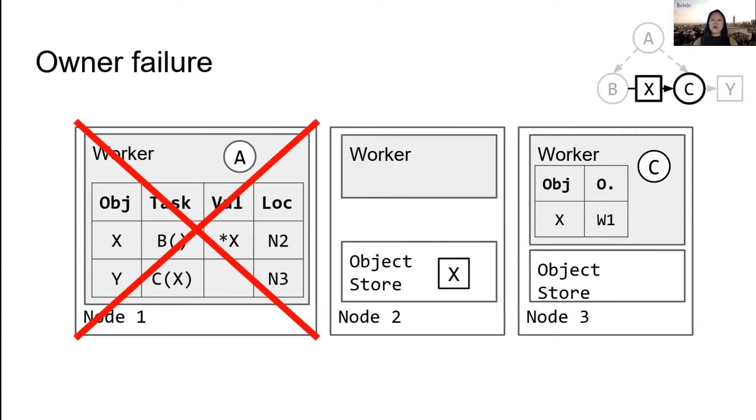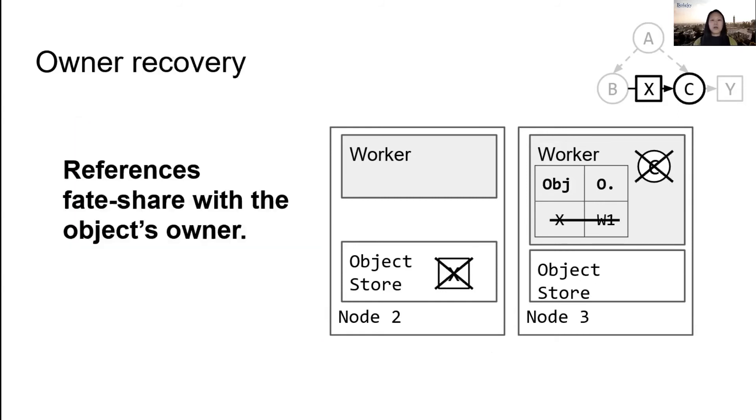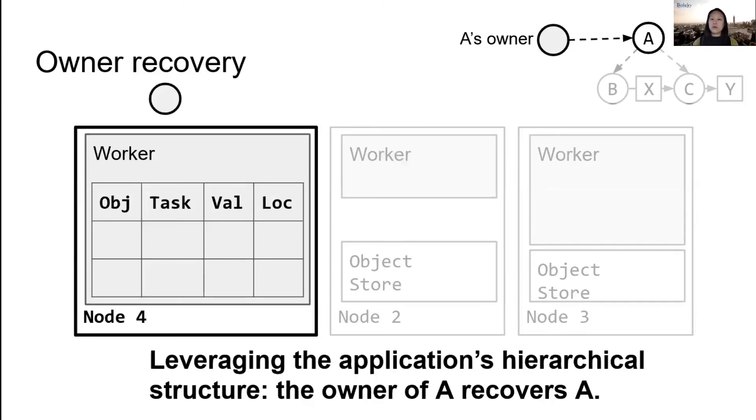Of course we also need to handle the case where X's owner fails while worker 3 is trying to dereference X. The main challenge here is that we've now lost all of the system metadata that was on worker 1. So somehow we need to recover and finish executing C. To ensure progress, we first clean up all of the state related to X using the cached owner address to detect the failure, and then we rely on the hierarchical nature of the application. So B and C are shared with A, but eventually A's owner will resubmit A, which in turn resubmits B and C. So we trade off some persistence in exchange for simplicity and lower runtime overhead, and importantly we don't sacrifice correctness.